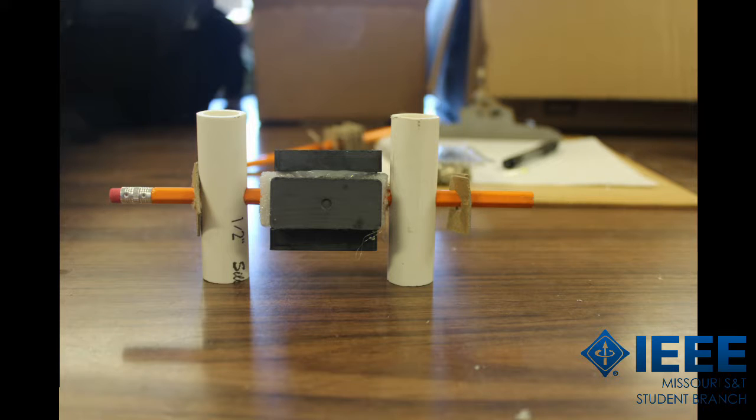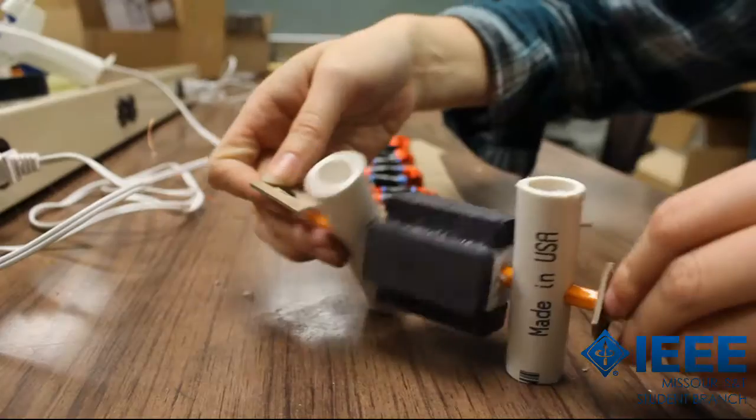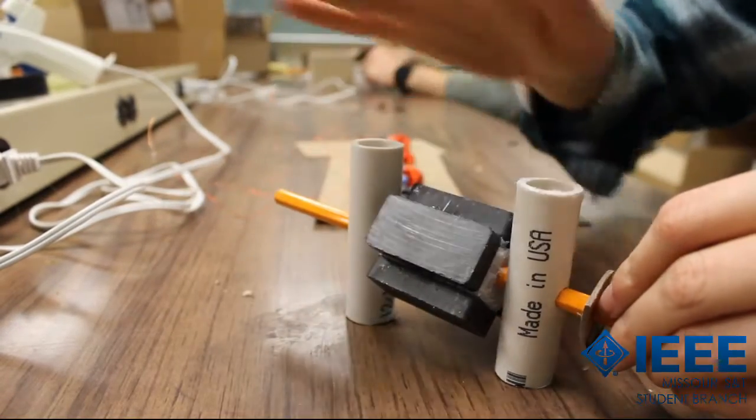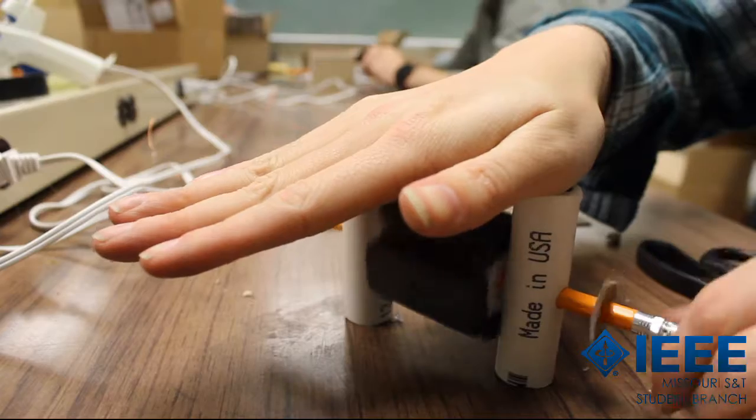Slide a PVC pipe, the magnet block, and then the other PVC pipe onto the pencil. Test that the pencil will spin. If the pencil is catching on anything, fix this before moving ahead.